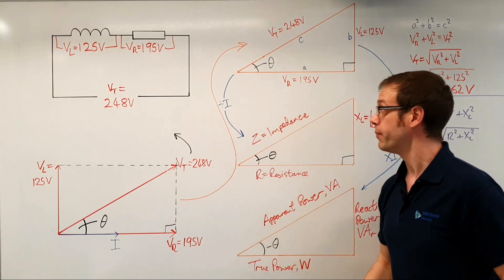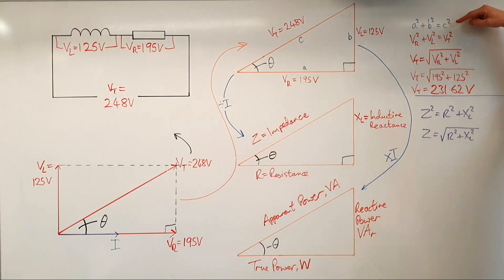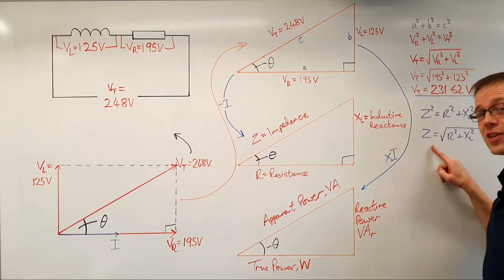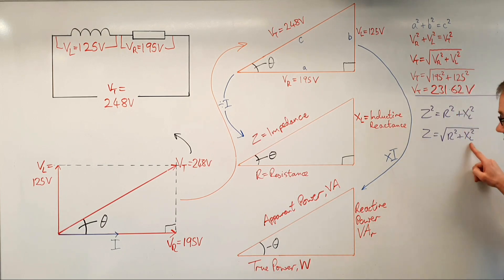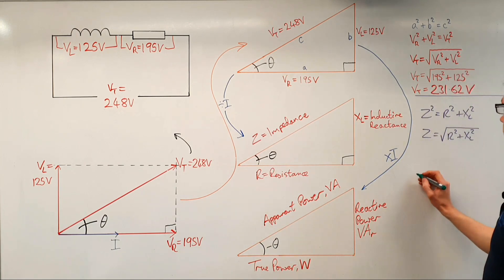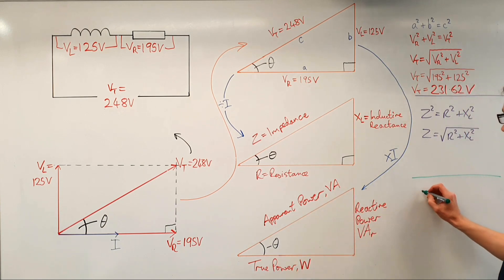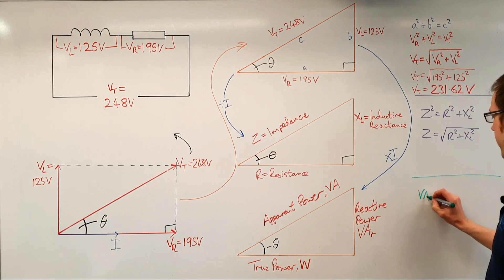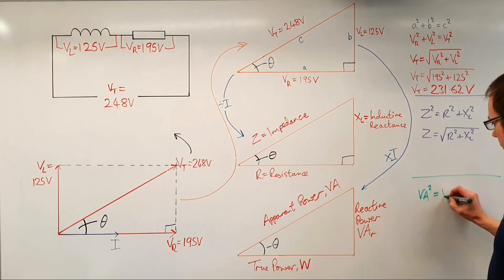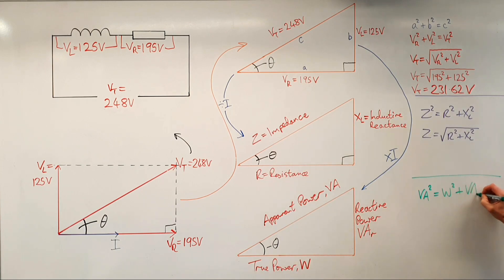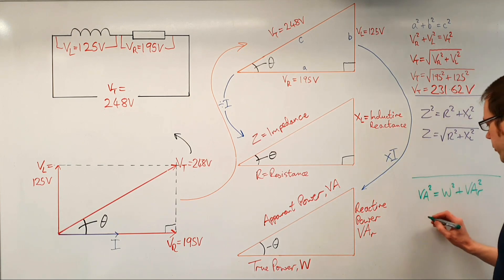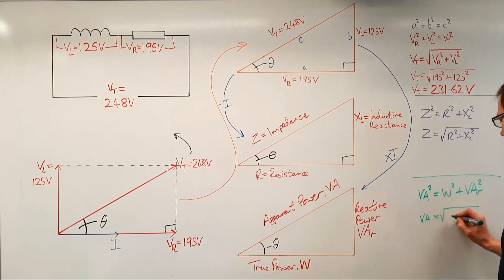As we saw in previous videos, we've got our relationships between the voltages that can be expressed using Pythagoras. We've got our relationships between the oppositions to current flow which can also be expressed by Pythagoras. And amazingly we can also use this to explain the relationships between the powers in the circuit. We would say that the apparent power in volt-amperes squared is equal to the true power squared plus the reactive power squared. So VA = √(W² + VAR²).